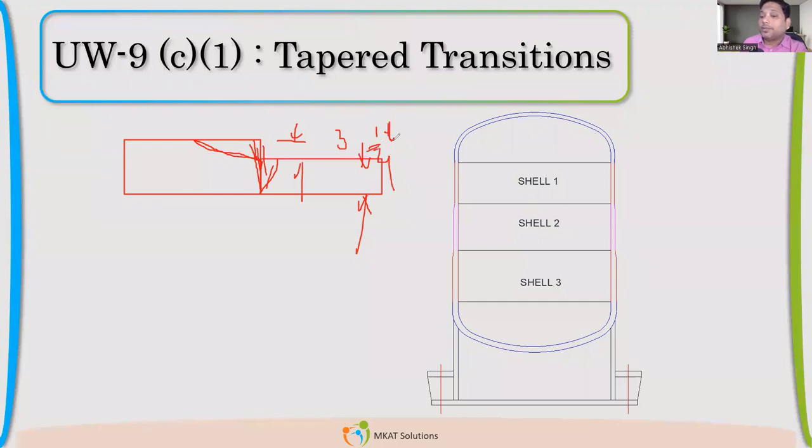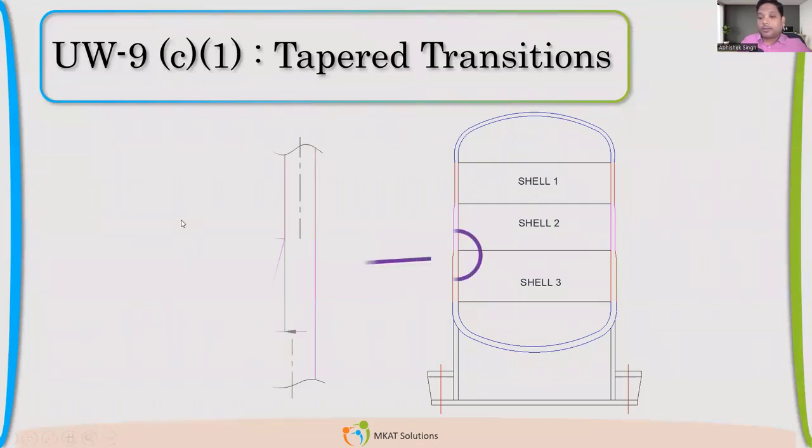So, one-fourth of the T or three mm. If the difference is more than three mm or one-fourth of the T, whatever is the minimum of these two, then we have to provide tapered transition and tapered transition requirement is very simple.